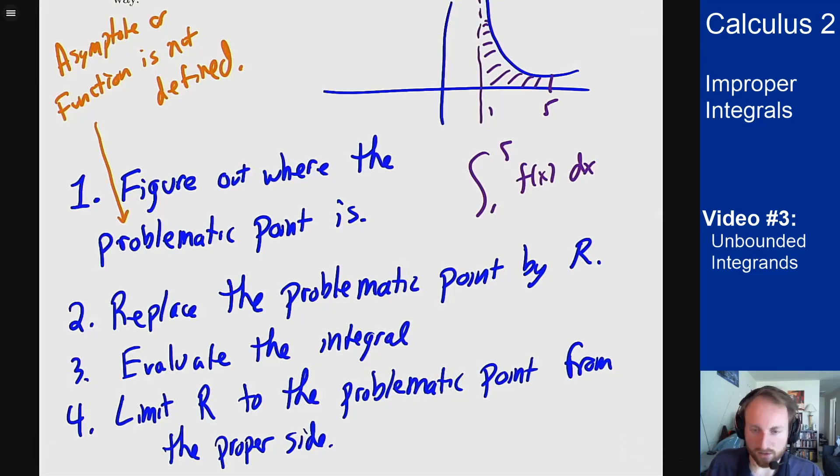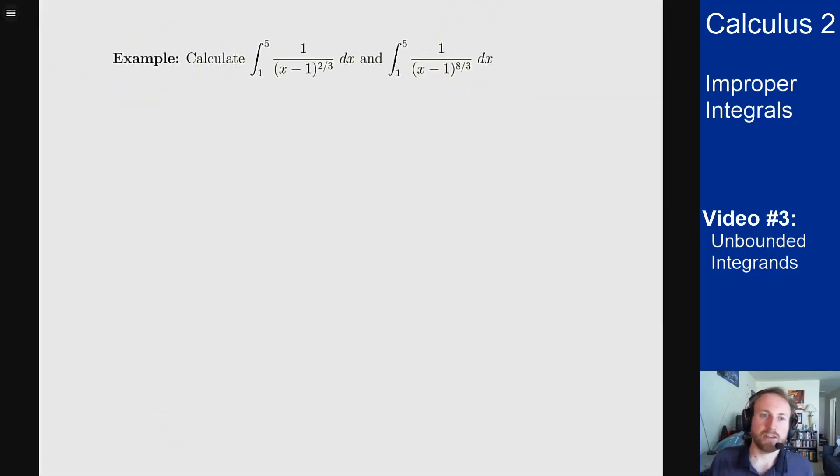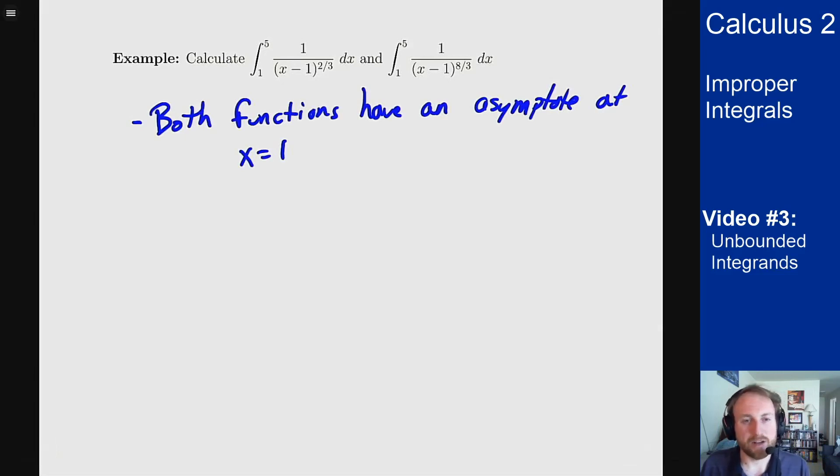Let's see an example of what this might look like. Here are two integrals we want to solve: the integral from 1 to 5 of 1/(x-1)^(2/3) dx and the integral from 1 to 5 of 1/(x-1)^(8/3) dx. These might look like innocent integrals at this point. However, they are both improper integrals. Why? Because there's an asymptote at 1. We know that because the denominator is 0 at 1, which means in both cases I have to handle this like it's an improper integral because I have an asymptote at one of the endpoints.